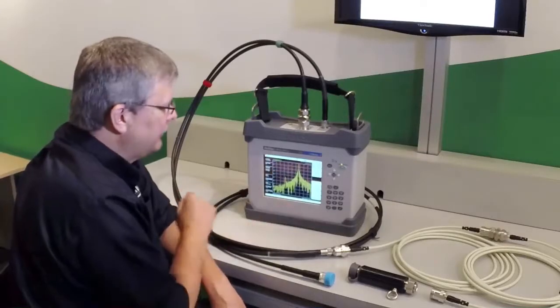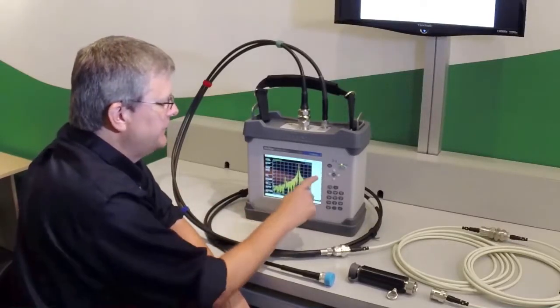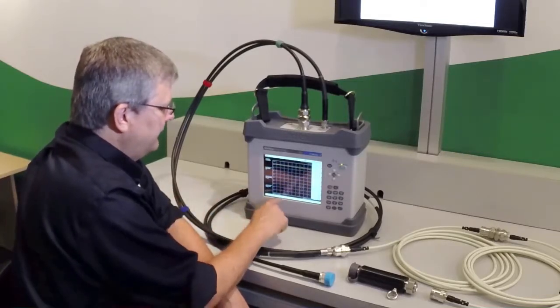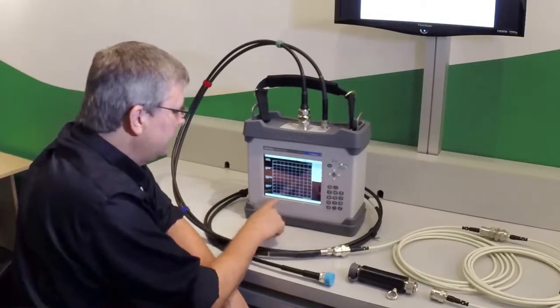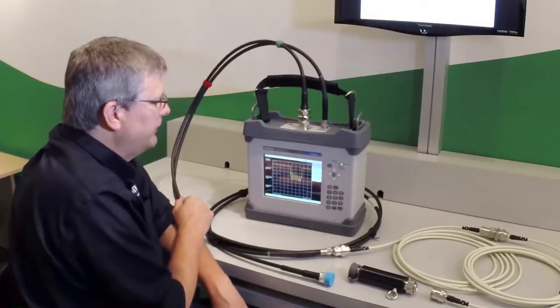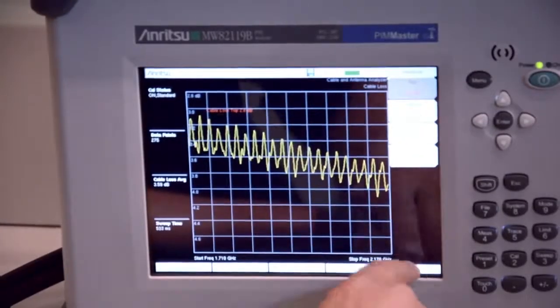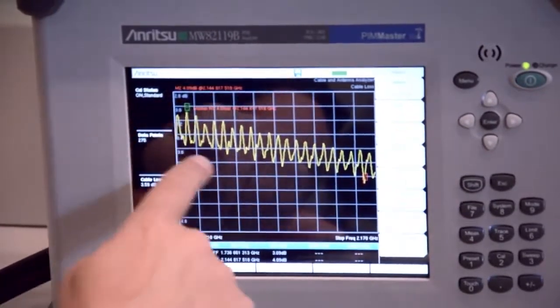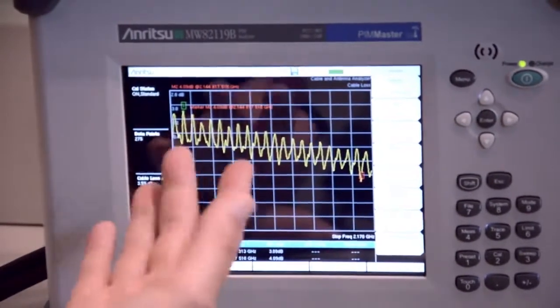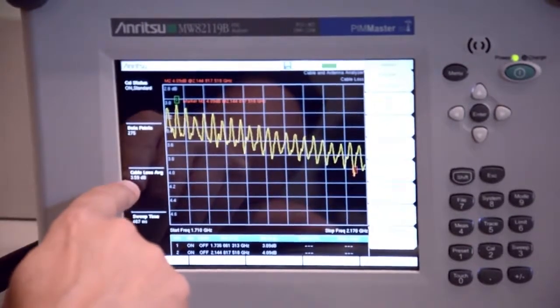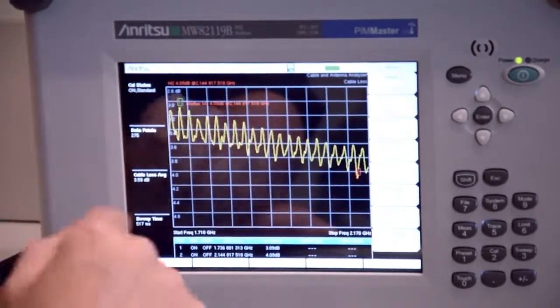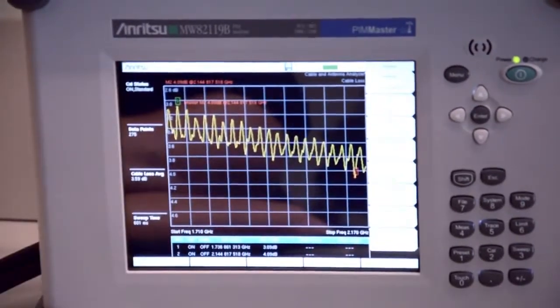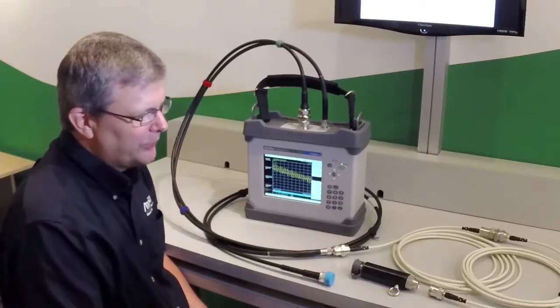While the cable is open, the next logical test to do is go into the measurements menu and perform a cable loss test. I'll do the amplitude to auto scale. In the marker menu, we have an automatic feature to automatically apply markers at the peak in the valley. And so it shows us here that the average cable loss is 3.59, but I've also put markers at the peak in the valley in case someone wants to go and mathematically verify that measurement.